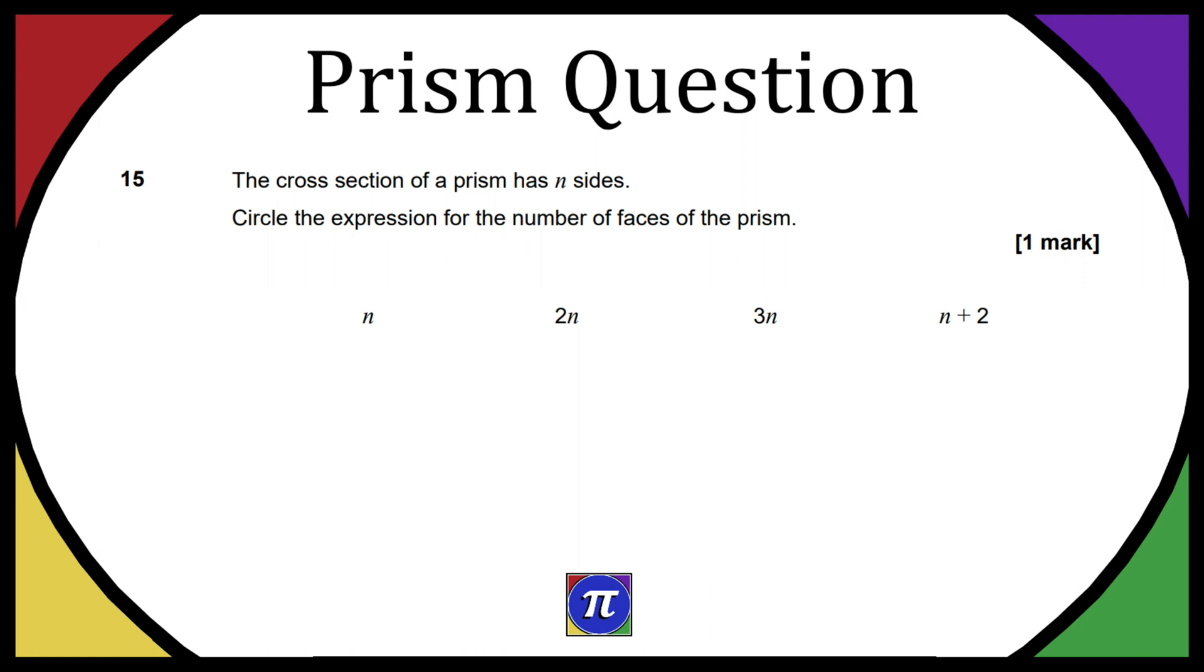Question 15 is a prism question. It says the cross-section of a prism has n sides. Circle the expression for the number of faces of the prism. One mark. The options are n, 2n, 3n, or n plus 2.